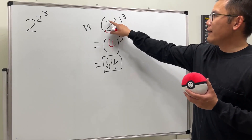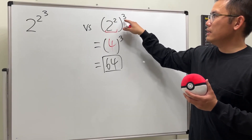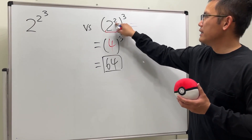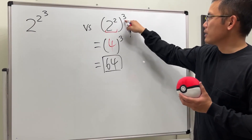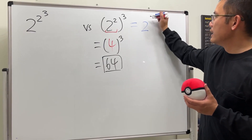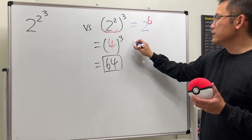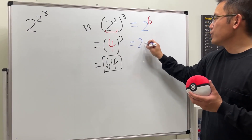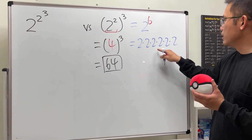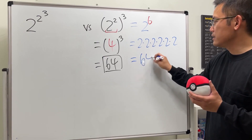There's also a shortcut: when we have (2 to the 2) to the third power, we can just multiply the exponents together. So this equals 2 to the sixth power. Working that out — 2 multiplied 6 times — also gives us 64.